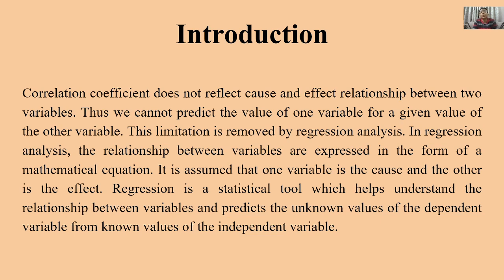Correlation coefficient की ज़रूरत इसलिए पड़ी कि strength of correlation — कितना मजबूत है यह सह संबन्द — वो गुणांक से पता चला। यह सिर्फ minus 1 से plus 1 हो सकता है। Minus 1 तब होगा जब perfectly negative correlation होगा, और plus 1 तब होगा जब perfectly positive correlation होगा। फिर भी correlation coefficient ने हमें यह नहीं बताया कि कौन सा variable cause है और कौन सा effect है — यानि कि कौन सा कारण है और कौन सा प्रभाव।